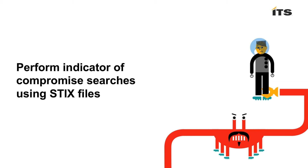ATP lets you perform indicators of compromise searches using STIX files. ATP lets you perform database searches using a Structured Threat Information Expression, also known as a STIX file. Currently, ATP only supports searches of the ATP database using a STIX file; endpoint searches using a STIX file are not supported. Only file hashes — the SHA256 or the MD5 — within the indicators or report tags are searchable. No other objects in the STIX file are queried.